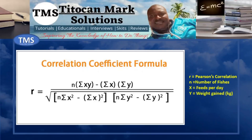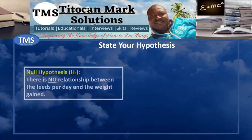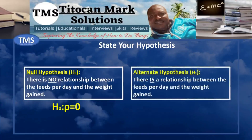The first step is to state the hypothesis. In this correlation analysis, the null hypothesis states that there is no relationship between the feeds per day and the weight gained — i.e., rho is equal to zero — while the alternate hypothesis states that there is a relationship between the feeds per day and the weight gained — i.e., rho is not equal to zero.